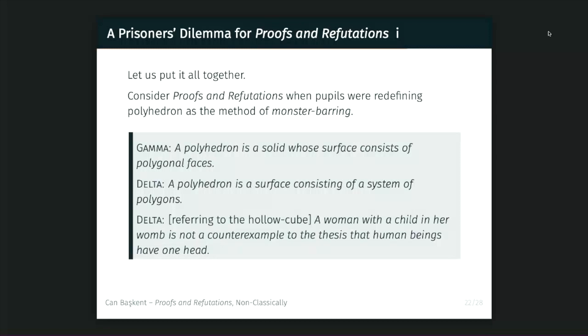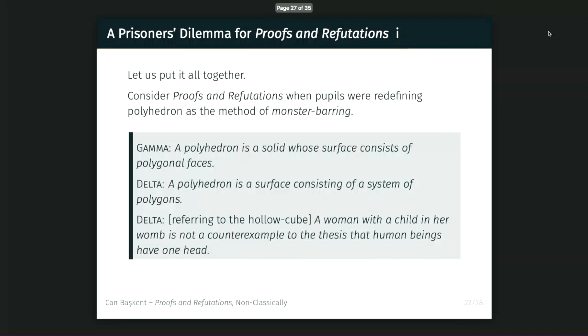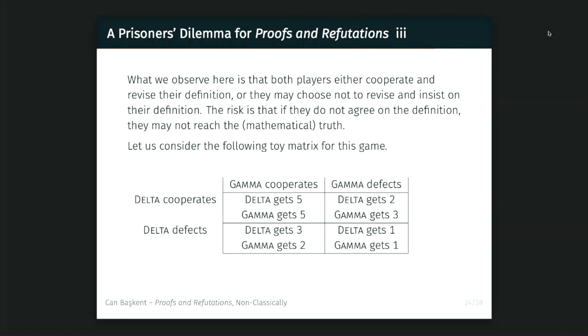Let me give a quick example of how these ideas play out. At the early pages of the book, Gamma and Delta are debating the definition of a polyhedron. Gamma says it's a solid whose surface consists of polygonal faces. Delta thinks it is a surface consisting of a system of polygons. And I couldn't help but include this funny quote from Delta: 'Everyone with a child, and everyone, is not a counterexample to the thesis that human beings have one head.' Then come the counterexamples — the first one is against one definition, the other against another — and when given a counterexample, the players have two options.